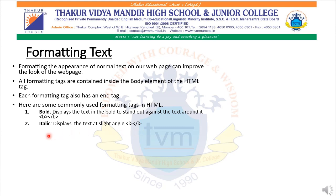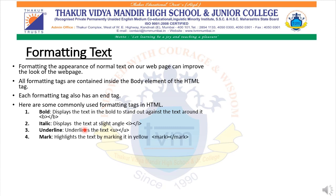Third is the underline tag. Underline tag starts with an open U tag and ends with a closed U tag. The text written between them has an underline under it. Mark tag starts with an open Mark tag and a closed Mark tag. The text written between them has a yellow color marking over it.